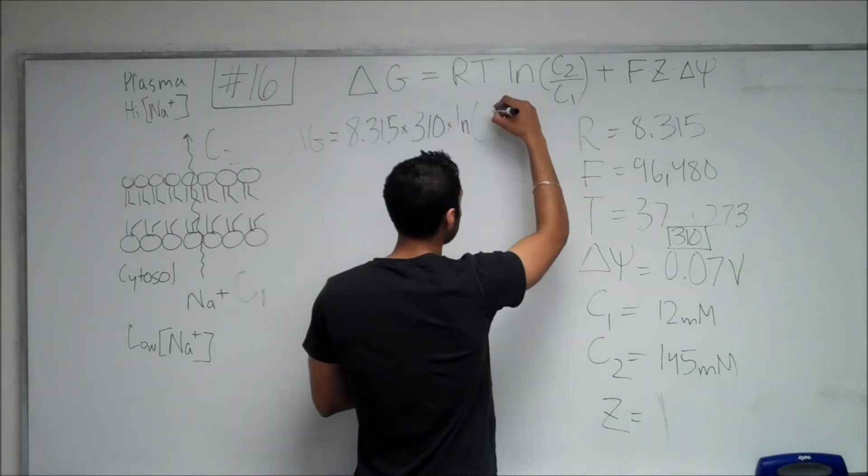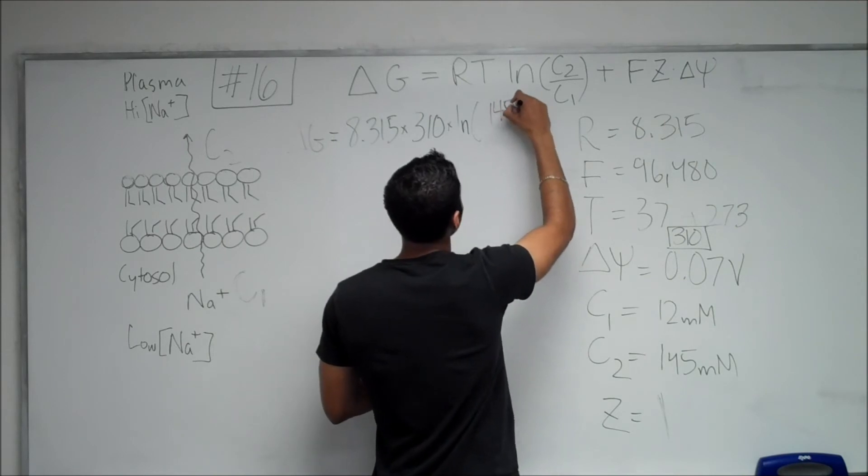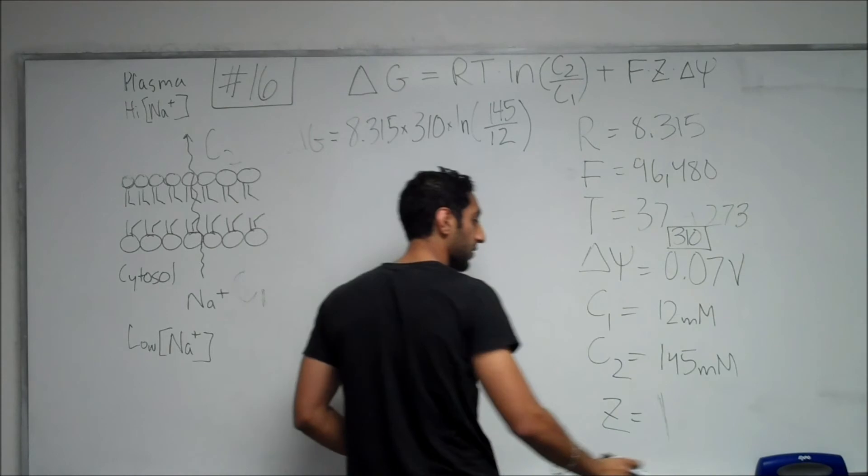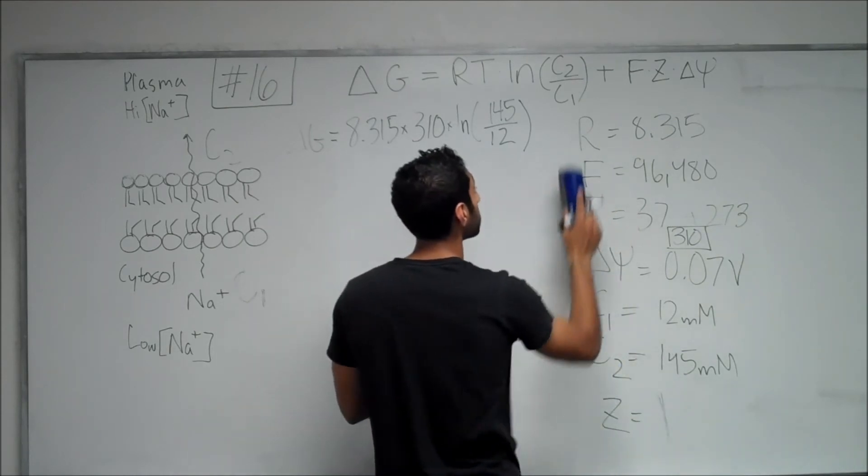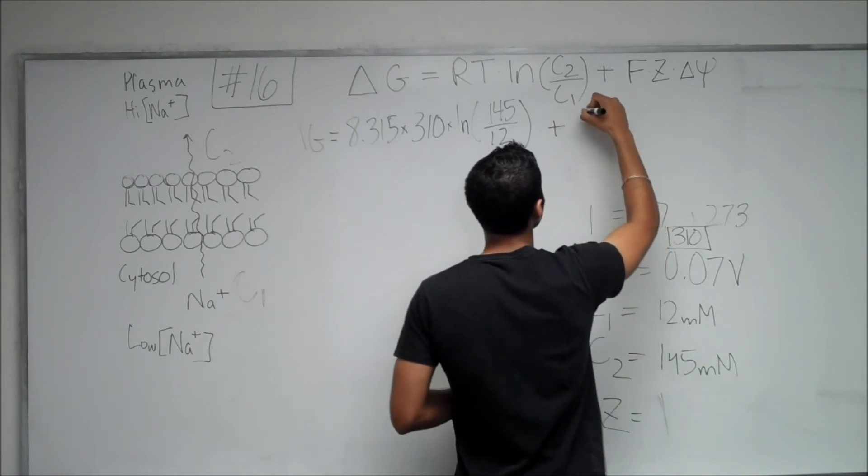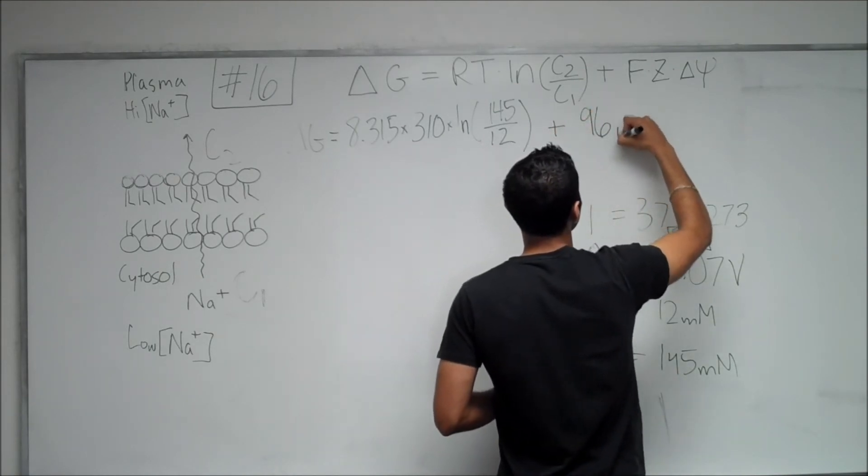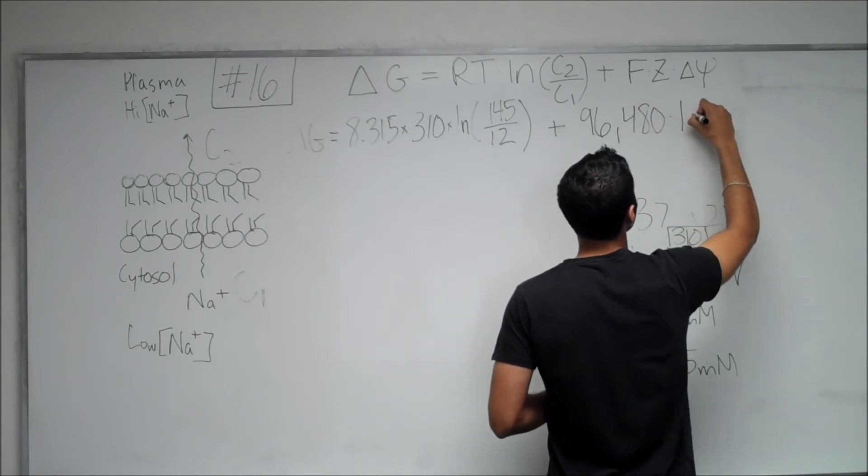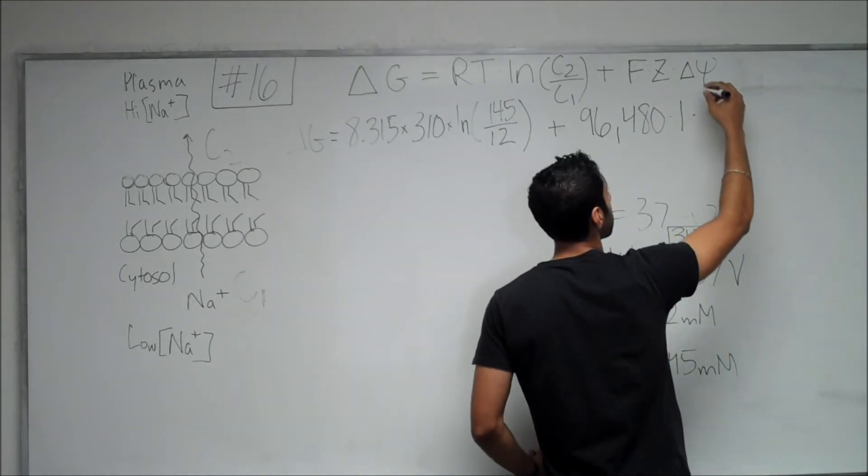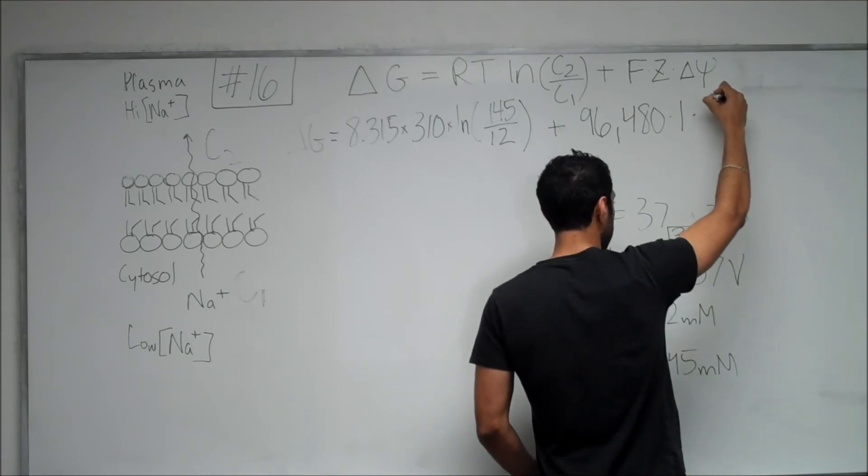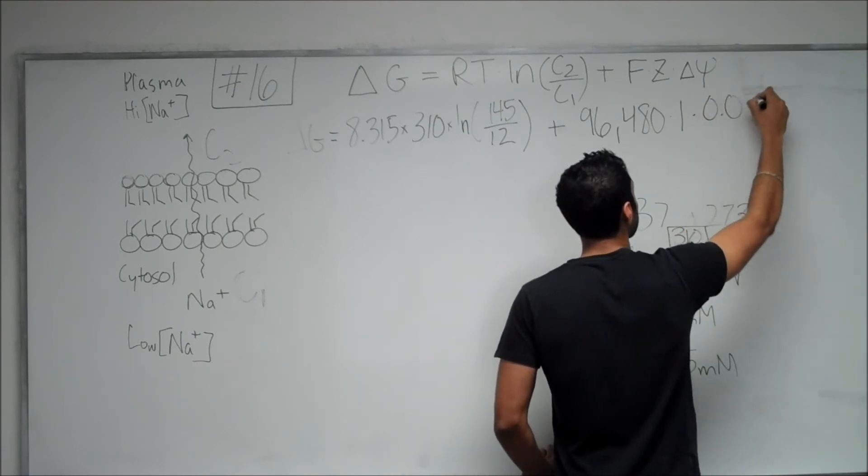So, C2 is 145 divided by 12, and then now we have to add the last part. Let me just erase that real quick. Plus Z F delta psi, which is 96,480 times 1 times delta psi, which is 0.07 volts.